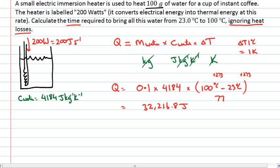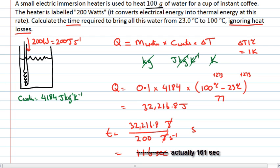To work out how long that would take, well, we know we're giving it 200 joules every second. So we just need to divide that number, 32,216.8 joules by the power that we're running at, by 200. Remember, the units for this are 200 joules per second, the joules cancel, and then we've got one over per second. So one over per second has the units of seconds, so 161 seconds is how long it takes to heat that water up.